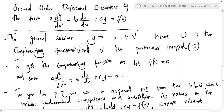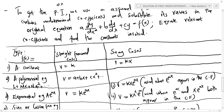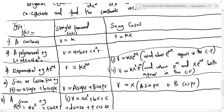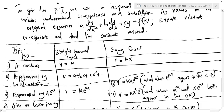The complementary function is obtained by letting f(x) be equal to zero and solving it the way we were solving before. The particular integral is obtained by using an assumed PI, which will be given from a particular table. We use an assumed PI from the table — which contains undetermined coefficients — and substitute its values into the main equation. Then we equate the relevant coefficients and find the constants involved. This table is very important because it tells us the assumed PI needed to get the particular solution.